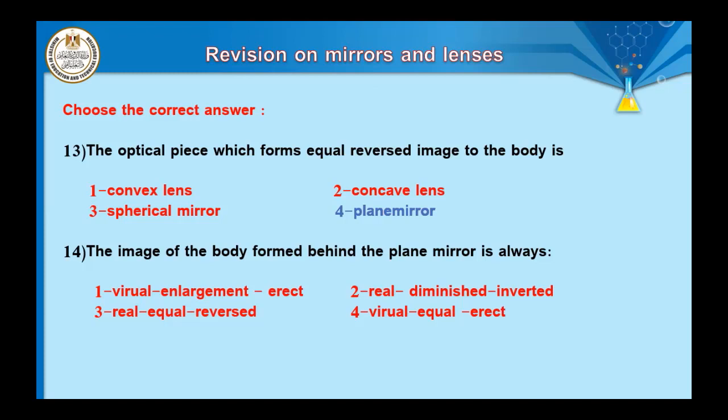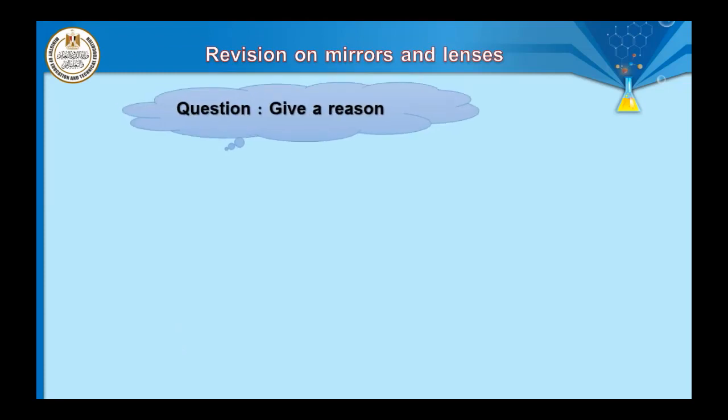This means the right part in reality appears as the left part in the mirror, and vice versa. Question number fourteen: the image formed behind the plane mirror is always virtual, upright, and equal in size — all three together. The correct answer is: virtual, equal in size, and erect.